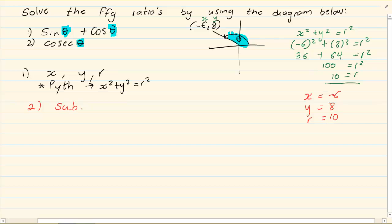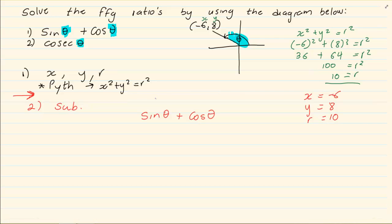These are the basic steps you need. But as we do more sums, there will be one more rule added between these two steps — so be aware, don't just go straight to substitution. Now let's substitute. The question was: what is the value of sin theta plus cos theta? Sin we know as y over r, and cos we know as x over r.